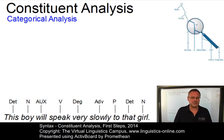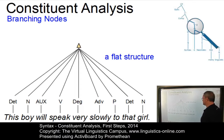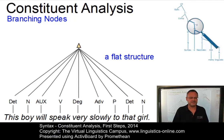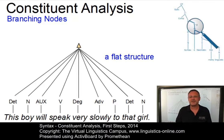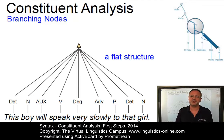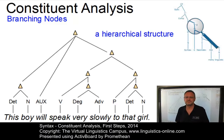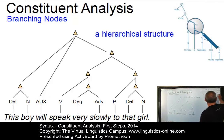Now we are ready to build constituents. To do this, we have several theoretical possibilities. On the one hand, we could opt for a really flat structure — a structure where we have one constituent associated with all the other nodes and elements we have identified. Here the branching node on top dominates all other terminal nodes. Since a flat structure misses many generalizations and does not show real hierarchies, modern syntactic theories all use a hierarchical structure with several intermediate constituents. So let's confine ourselves to that option, and let's return to step one and start all over again.